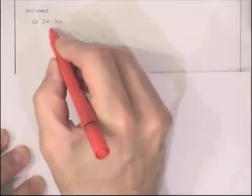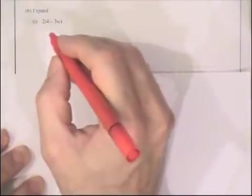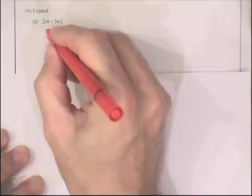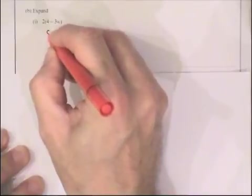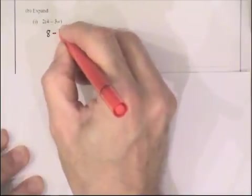Part b wants us to expand the bracket. That means what's outside the bracket must be multiplied by each term inside the bracket. So it's 2 outside the bracket, multiplied by each term inside. Inside you get a 4. So it's 2 multiplied by 4, which gives you 8. Then you get a minus 3w. So it's 2 multiplied by minus 3w. That's minus 6w. That's the expanded bracket.